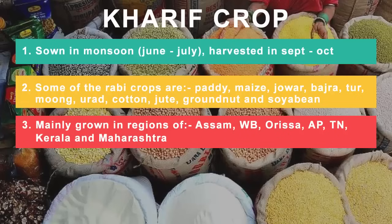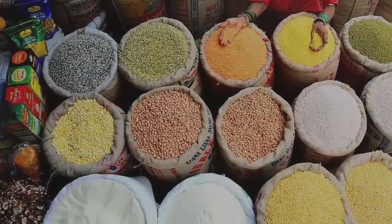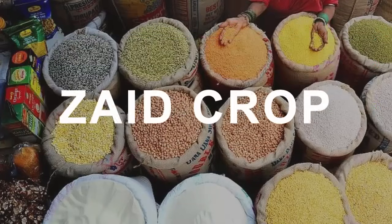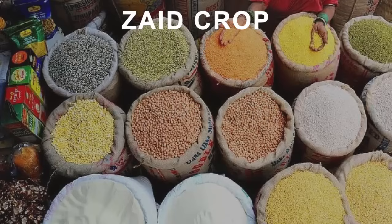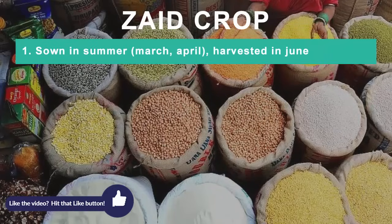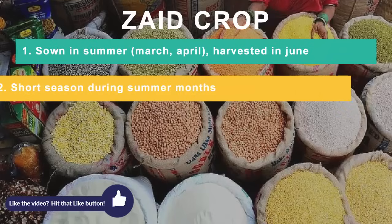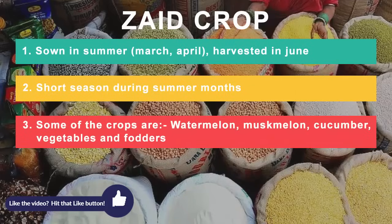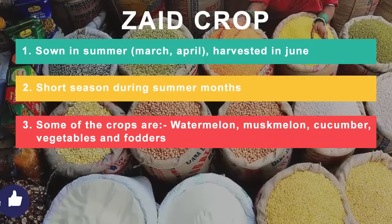After Rabi and Kharif season there is something called the Zayed season. It is a short season mostly in the summer. Some of the crops grown in this season are watermelon, muskmelon, cucumber and other vegetables and fodders. All of these fall under Zayed crops.